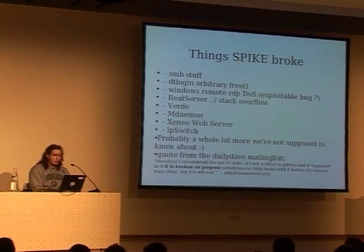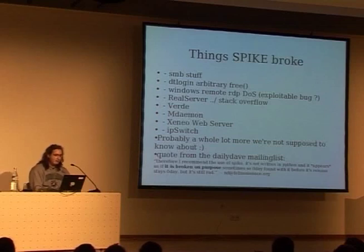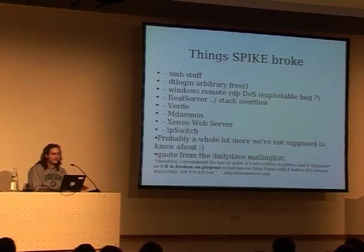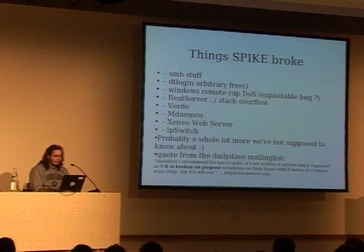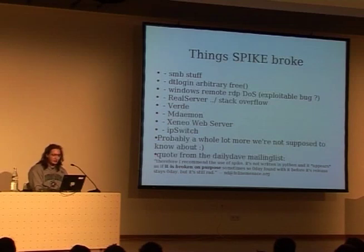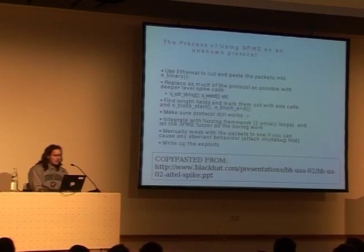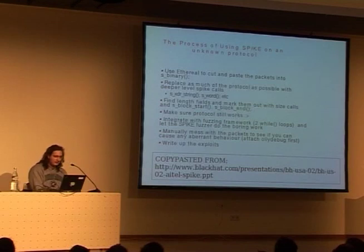Some stuff that Spike broke — it broke a lot of stuff. The interesting thing about Spike is that some of the scripts are kind of broken, like Dave Aitel probably broke them a little bit so zero-days he found don't get exposed. On his mailing list, a guy named Andy noted that although it's written in C and appears broken on purpose, it's really cool to use and find bugs. I was going to demo Spike with the gopher fuzzer to show bugs in Internet Explorer for macOS, but unfortunately I don't have a Mac with me. The code is on my website though — if you have a Mac and try it, you'll find a heap overflow.